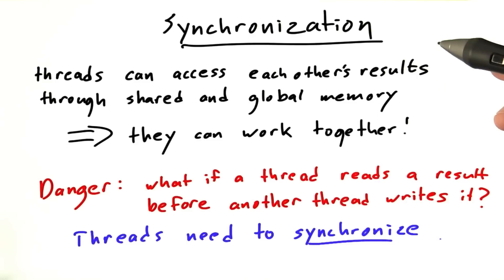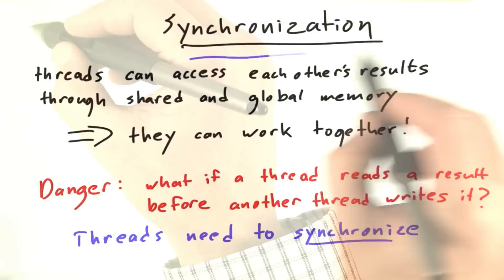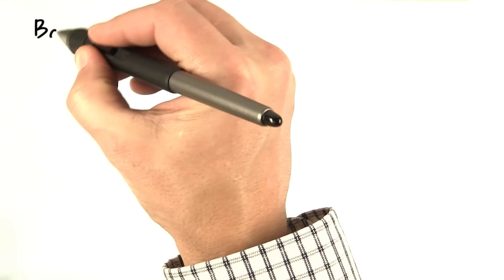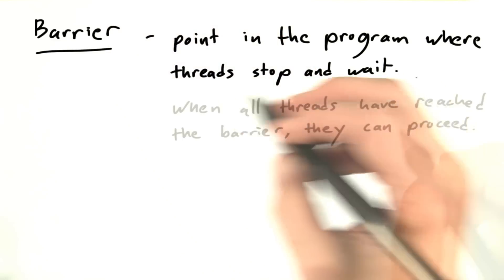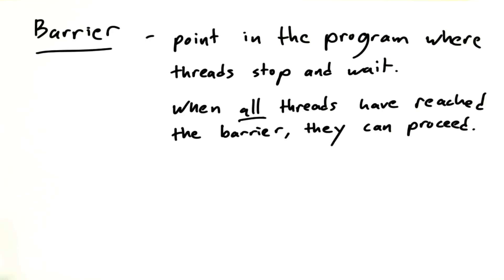This need for synchronization is really one of the most fundamental problems in parallel computing. Now the simplest form of synchronization is called a barrier. A barrier is a point in the program where all the threads stop and wait. When all the threads have reached the barrier, they can proceed onto the rest of the code.